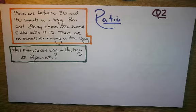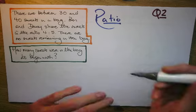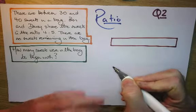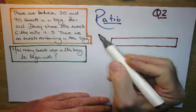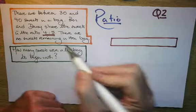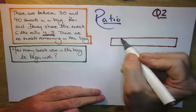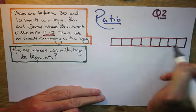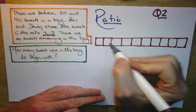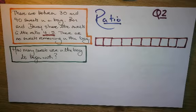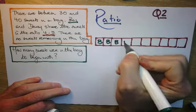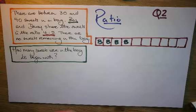So to answer this question, I like, with ratios, to have a bar. So I'm going to put a little bar out here. And I know that it says that Ben and Daisy share 4 to 5, which is 9 parts altogether. So there's 9 parts there. Now I'm going to put Ben as green, and Ben has 4 of these.